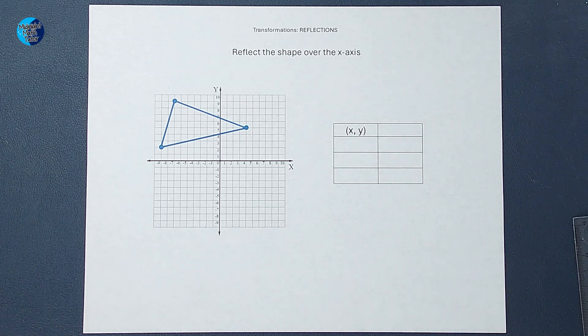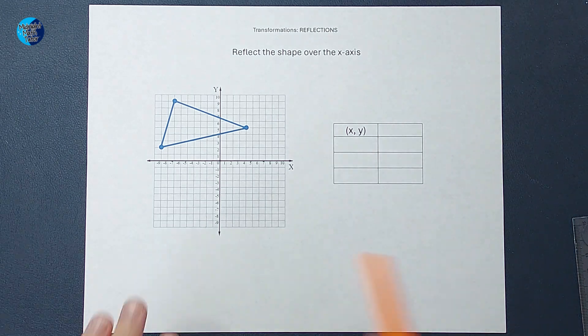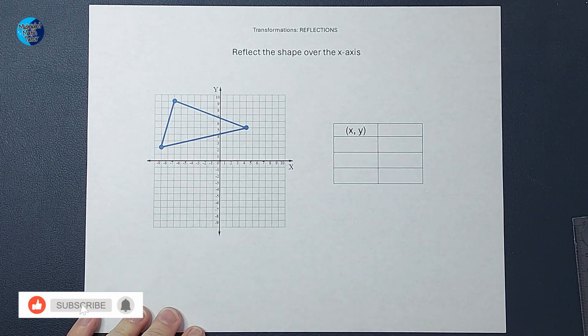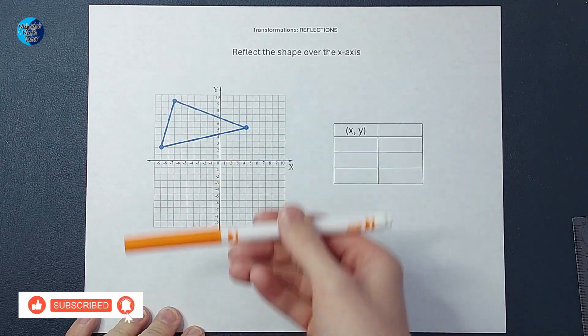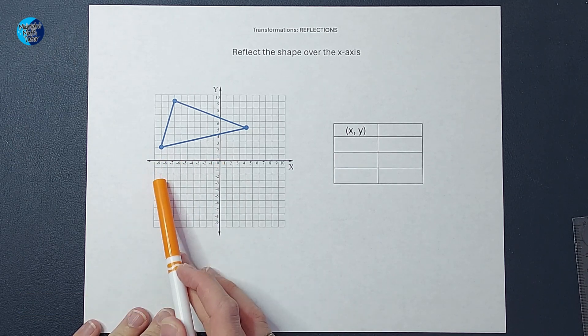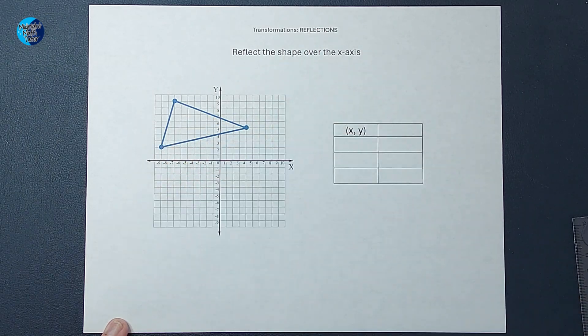So there's a couple different ways we could think about this. If I just wanted to try to figure it out myself, I could think, well, if I go over negative nine and up two, that's my original point. So to reflect it over the x-axis, I'm just going to go negative nine down two instead. Wouldn't that be that reflected point there?